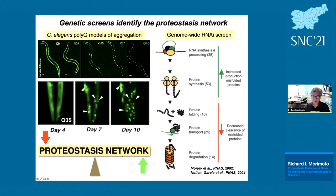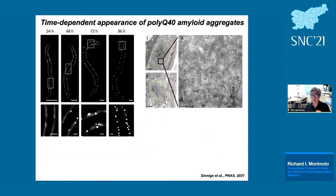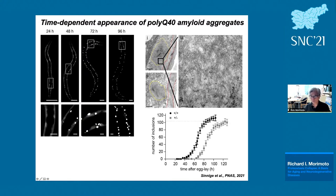This provided the first insight into the composition of what we call the proteostasis network. The system allows watching age-dependent aggregate formation in real time, and by electron microscopy you can confirm that these aggregates are indeed the 10 Å amyloid fibrils. Aggregation is absolutely concentration-dependent: making a homozygous animal heterozygous alone is sufficient to change the kinetics and rate of aggregate formation.